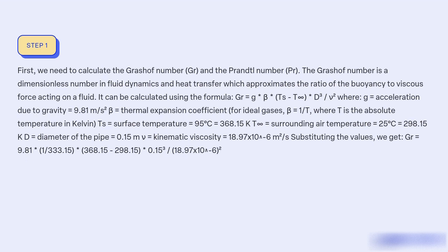It can be calculated using the formula: Gr = g × β × (Ts - T∞) × D³ / ν², where g = acceleration due to gravity = 9.81 m/s², β = thermal expansion coefficient for ideal gases.